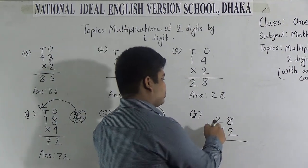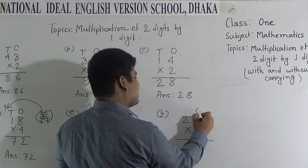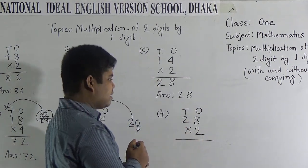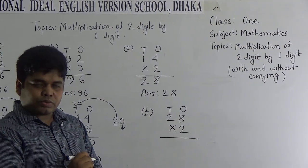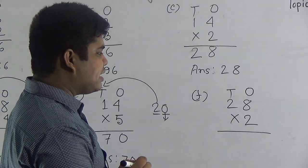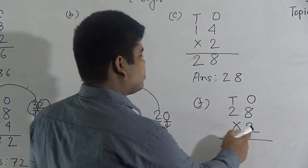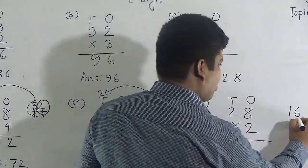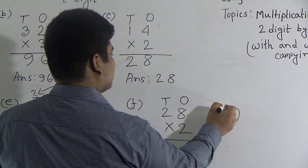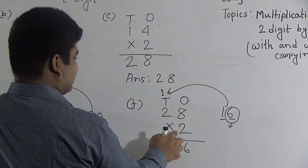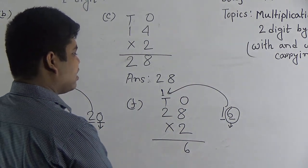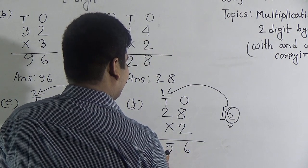Last one: 28 × 2. Here, 8 is in the 1's place and 2 is in the 10's place. So, we multiply 8 by 2 first, then we multiply 2 by 2. We count the times table of 2: 2 1's are 2, 2 2's are 4, 2 3's are 6, 2 4's are 8, 2 5's are 10, 2 6's are 12, 2 7's are 14, and 2 8's are 16. It has 2 places: 1's place and 10's place. So, the 1's place digit 6 is placed in the 1's place, and carrying 1 goes to the 10's place. Now, we multiply 2 by 2: 2 2's are 4. And this 4 is added with the carried 1, and we get 5. 5 is placed in the 10's place. So, 56 is the answer.